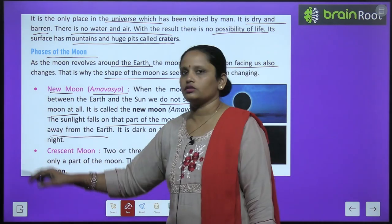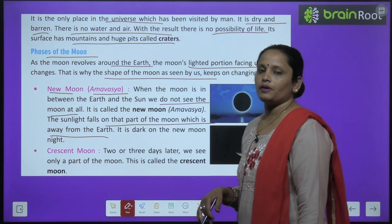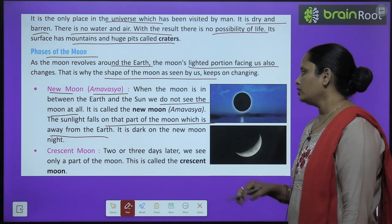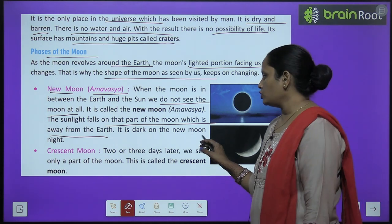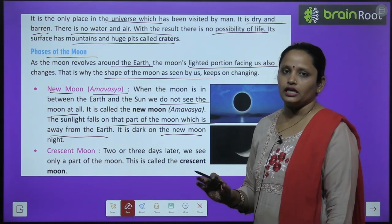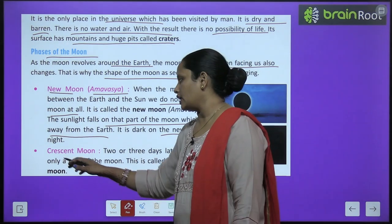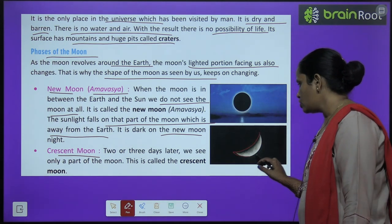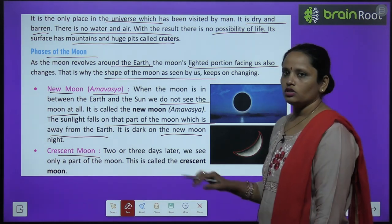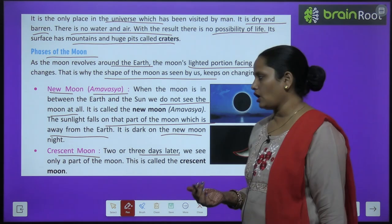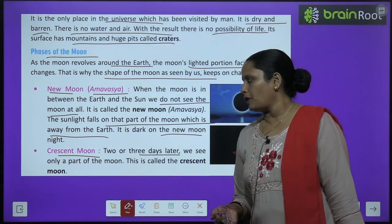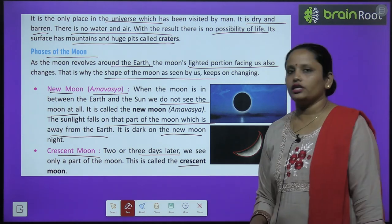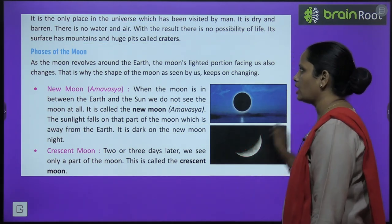The sunlight falls on that part of the moon which is away from the earth. It is dark on the new moon night. Two or three days later we see only a part of the moon — this is called the crescent moon.